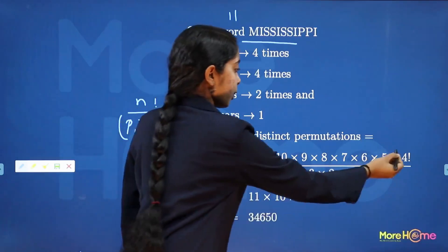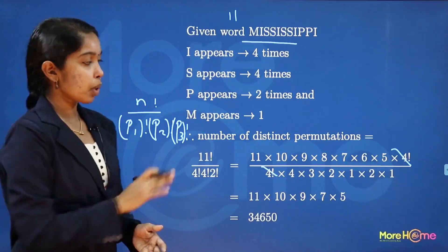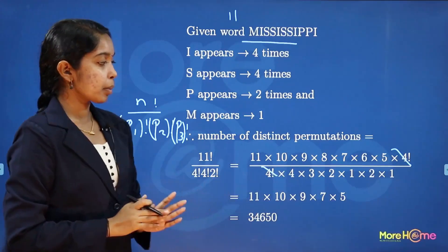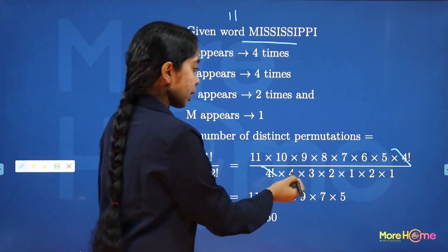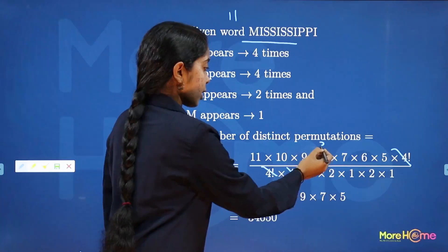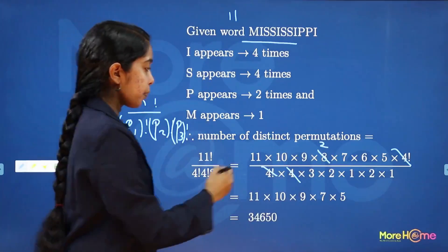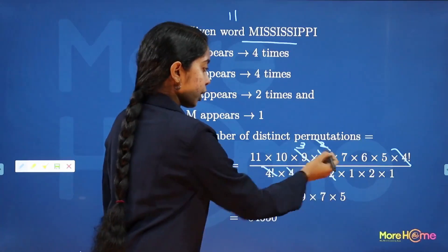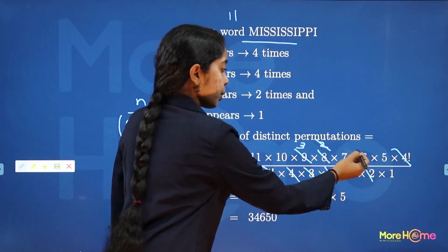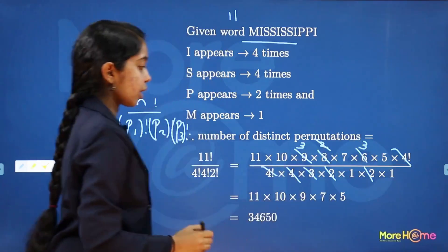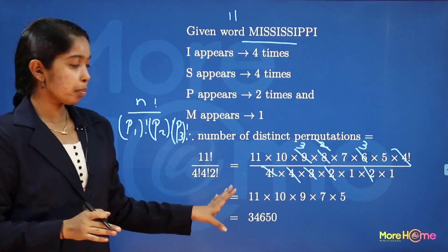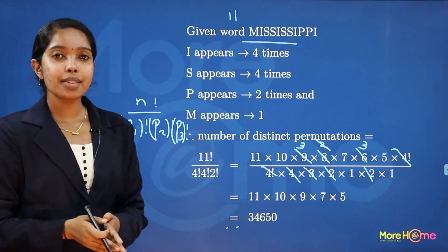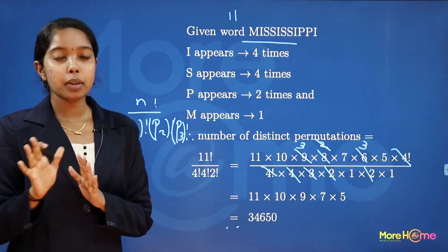Expanding 11 factorial in terms of the denominator factorials and cancelling common terms — 4 factorial cancels, then the factor of 2 cancels with the 2 factorial — the remaining product of numbers gives 34,650. So the total number of distinct permutations of MISSISSIPPI is 34,650.